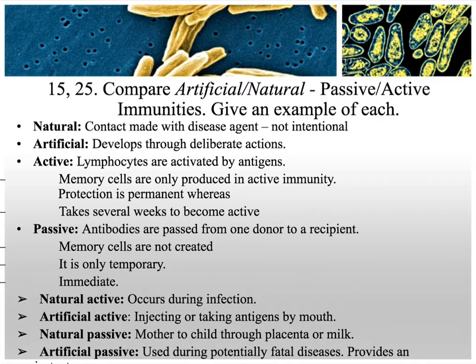When moms pass antibodies to their fetuses or babies, that's natural and passive — the baby did not make those antibodies themselves. Passive immunity won't last; the antibodies will only be there for a while and then they're gone, and memory cells were not made. Artificially, you can force exposure — a flu shot exposes you to the antigen and you actively make antibodies. For something like Ebola, you don't have time to make antibodies, so an antiserum is given — that's artificial passive immunity — and you won't develop long-term immunity because you didn't make the antibodies or memory cells yourself.